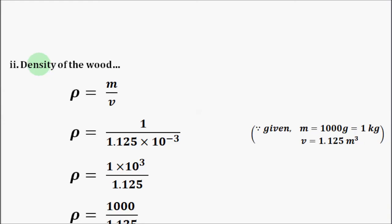The second part is to find density of the wooden block. The density formula is ρ = m/v.